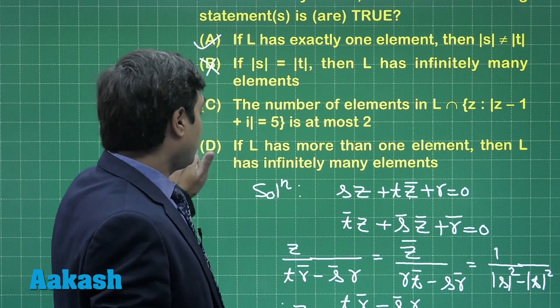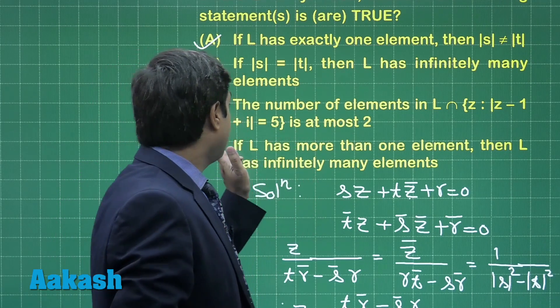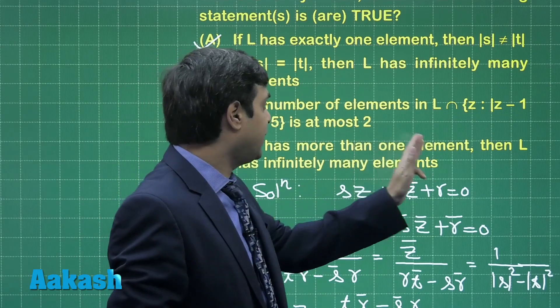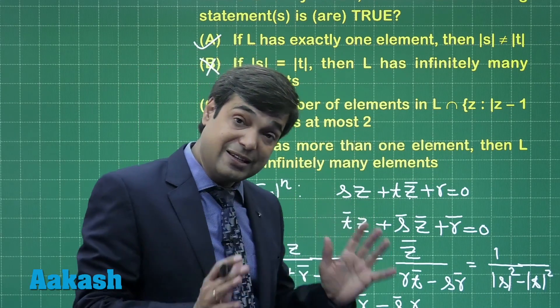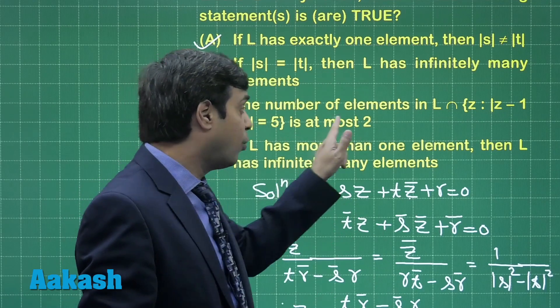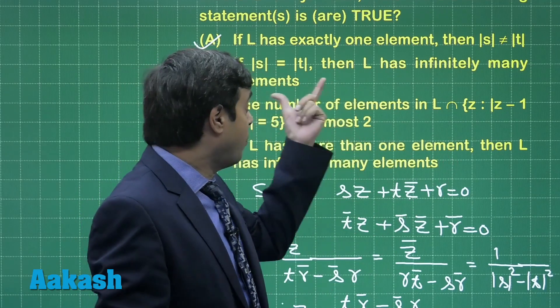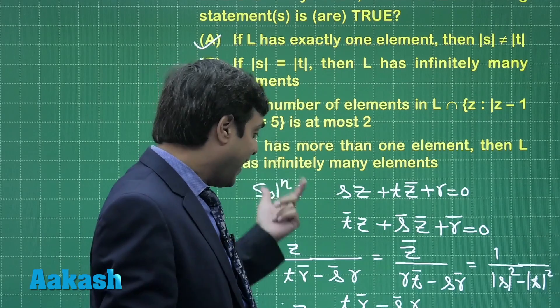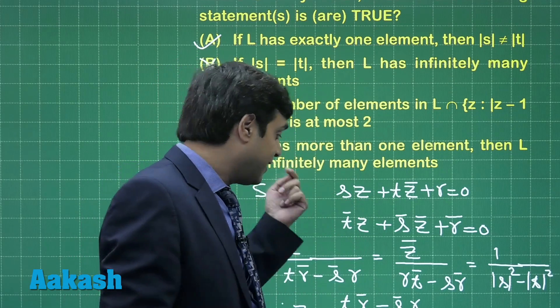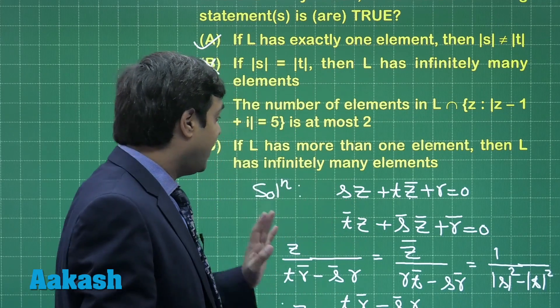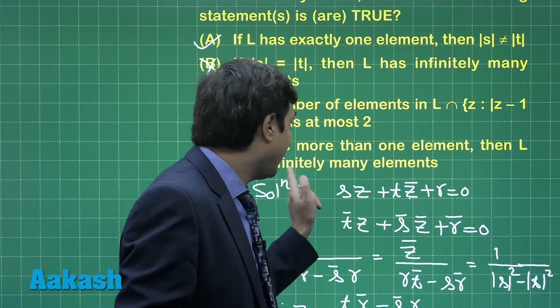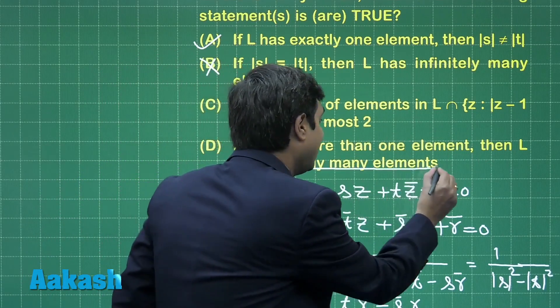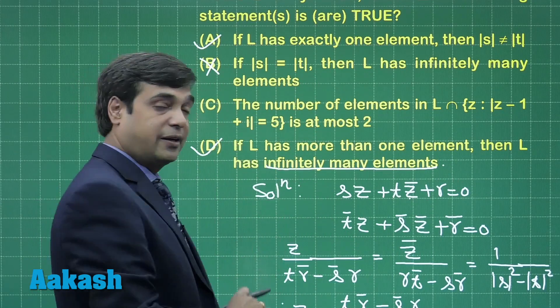Option 4 is also talking about elements in L. If L has more than one element then L has infinitely many solutions. Yes, this is correct. If L has more than one element, meaning |S| is equal to |T| along with Tr̄ minus S̄r equals 0, then we have infinitely many solutions for it. Definitely L has infinitely many elements in that case. So option D is correct.